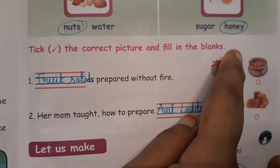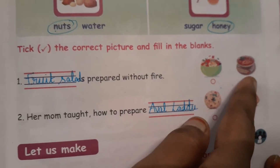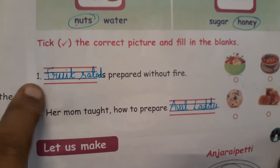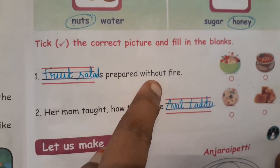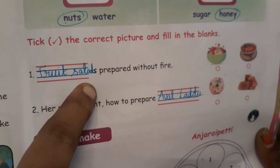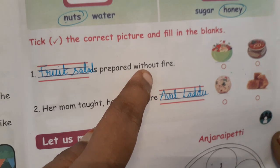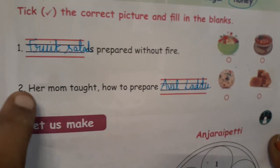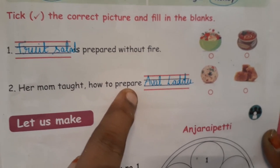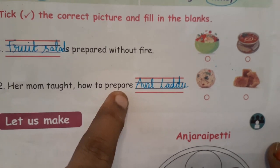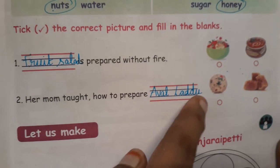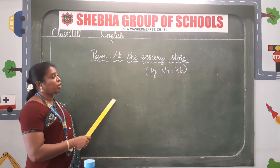Next, take the correct picture and fill in the blanks. See, the pictures are given here and you have to write the correct word. First blank: fruit salads are prepared without fire. Second: her mom taught how to prepare aval laddu. So Gayatri's mom taught her how to prepare aval laddu.